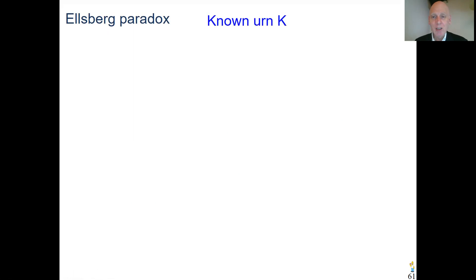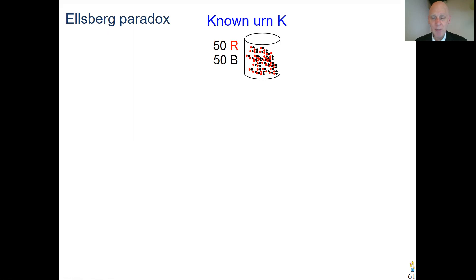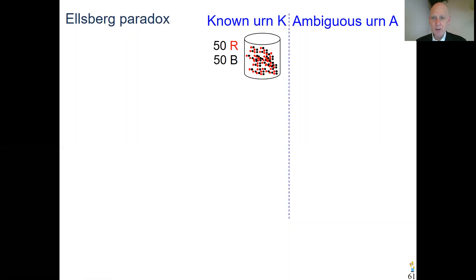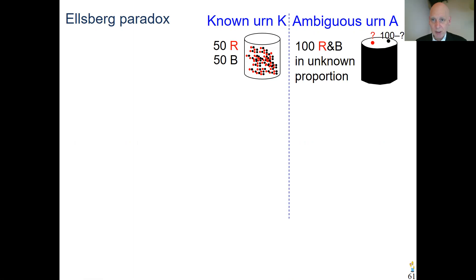Imagine there's a known urn K. It contains 100 balls — 50 are red and 50 are black, so it has a known composition. There's a second, other urn, called the unknown or the ambiguous urn. It also contains 100 balls, and every ball has either the red or the black color, but the composition of the colors is unknown.